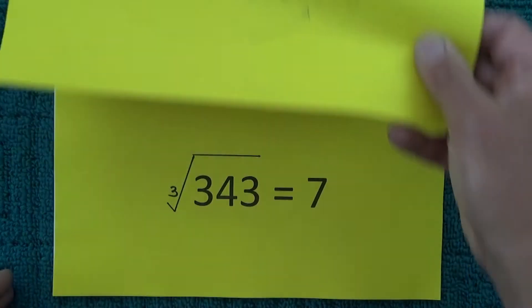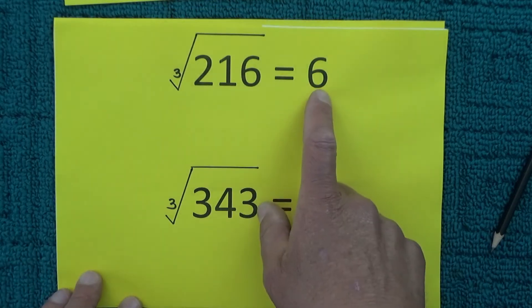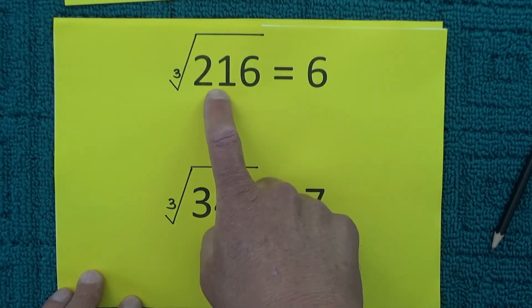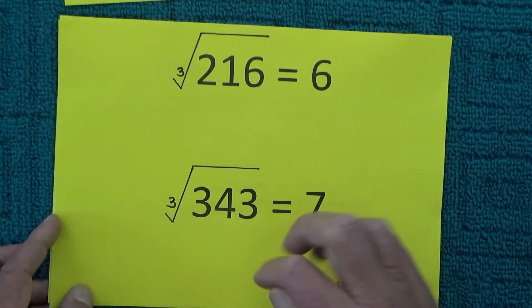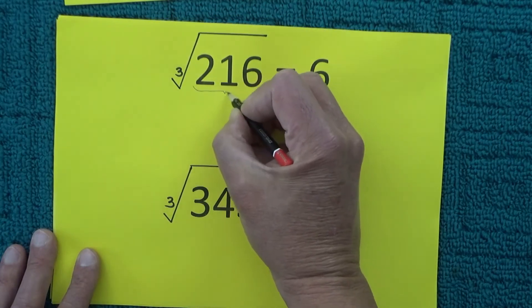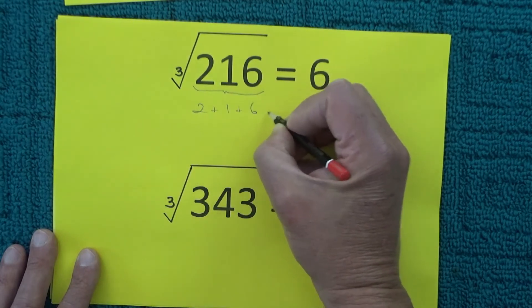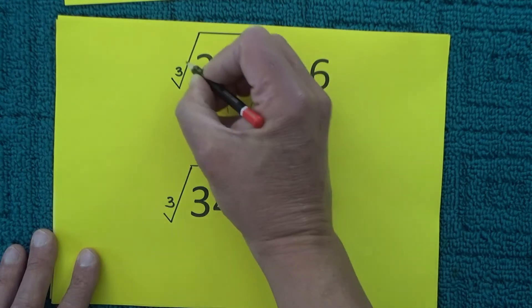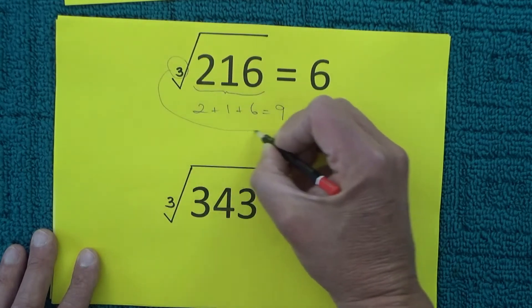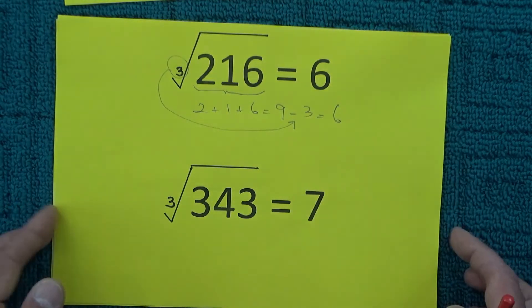So what I did was I tried a few other different combinations. First of all I did the cubed root of 216 which is 6. So in this case it's the 2 plus the 1 plus the 6 equals 9 and then take away 3 minus 3 actually equals 6 and I thought to myself gosh.